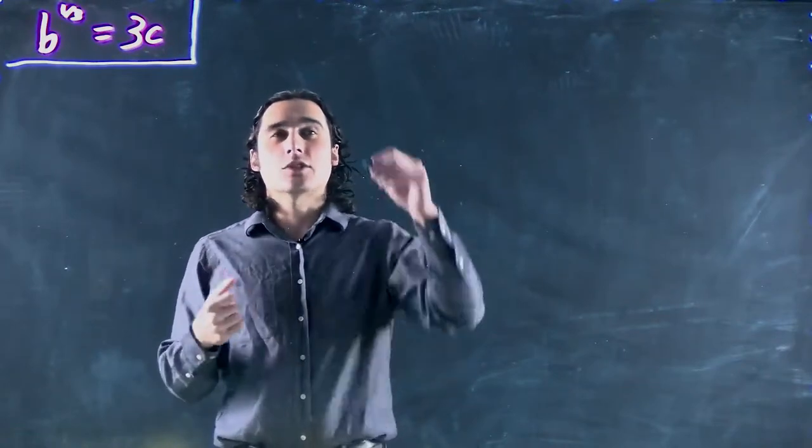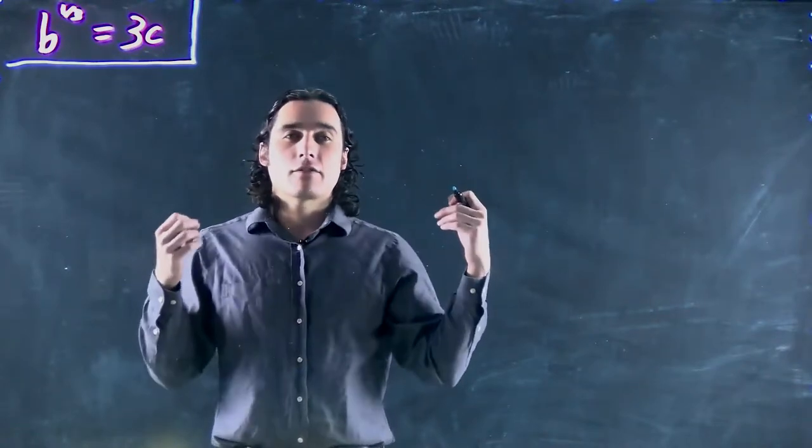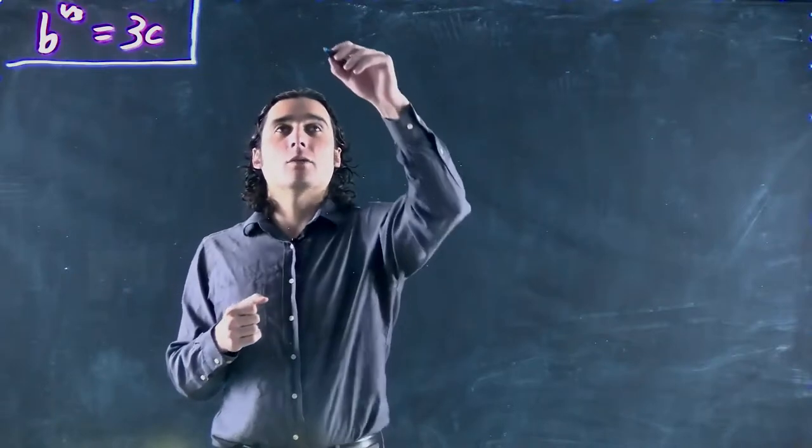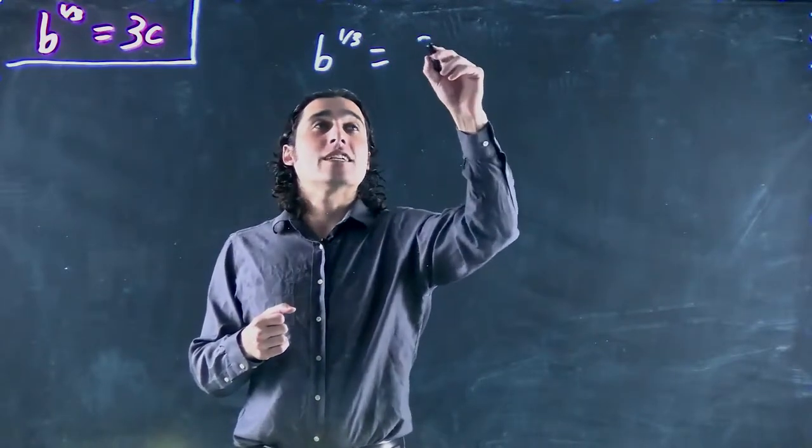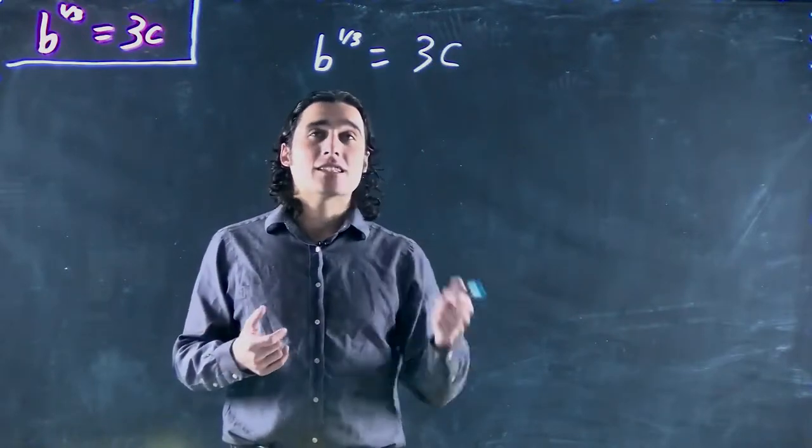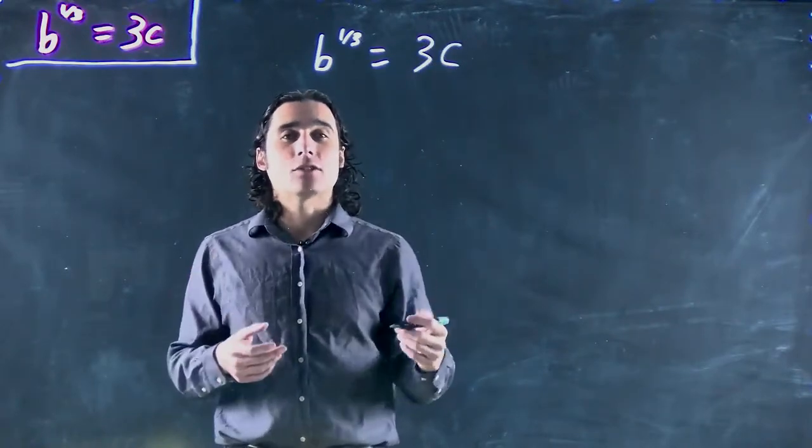In this case, what we have is we're starting with a fraction as the exponent. So we got b to the 1/3 equals 3c. Well, doesn't matter. The same basic ideas hold on.